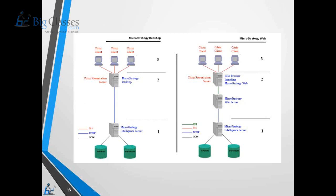If you need to use MicroStrategy Web, MicroStrategy is configured as a four-tier architecture. You have the same metadata and warehouse connected to the MicroStrategy intelligence server, but you also need a MicroStrategy web server, which can be deployed on IIS or Apache Tomcat. Once the intelligence server and web server are configured, multiple clients can access MicroStrategy via MicroStrategy Web. All access is secured — only authenticated users can access the MicroStrategy environment.